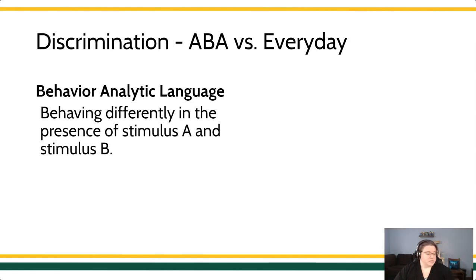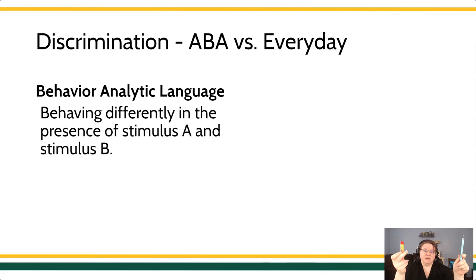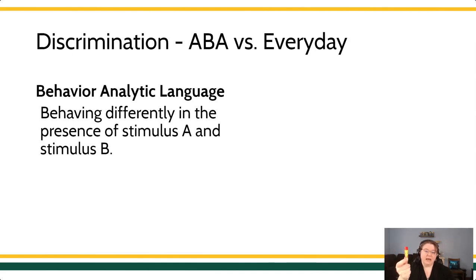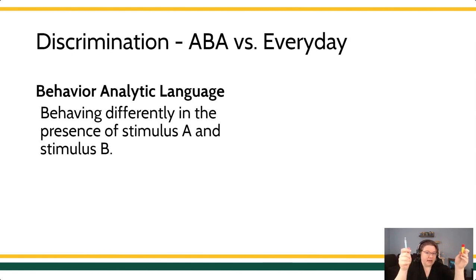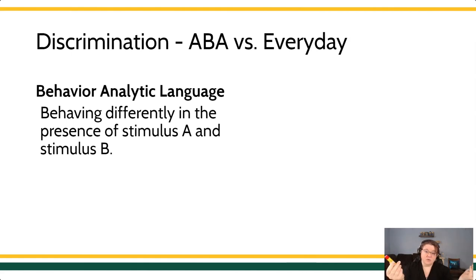So if I were to present you with two different items and say, what is the color of this item, what is the color of that item, which one of these is red — if you are more likely to select this as the red item, we can see that you're telling the difference between them. And when you reliably select this as the red item no matter which side I place it on, you're demonstrating a discrimination between the colors I'm presenting.